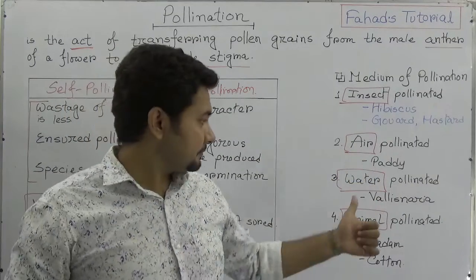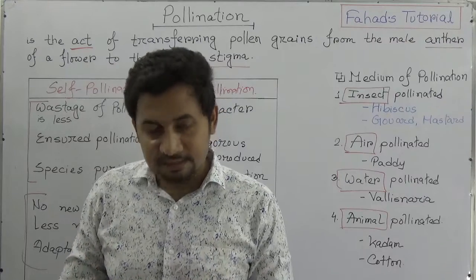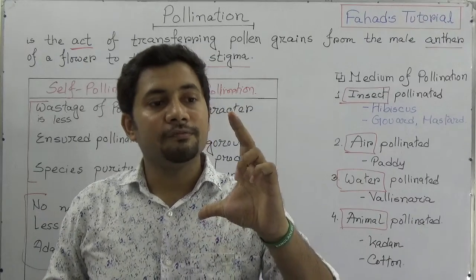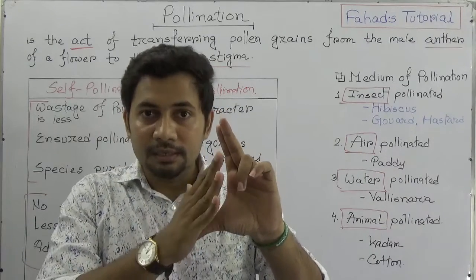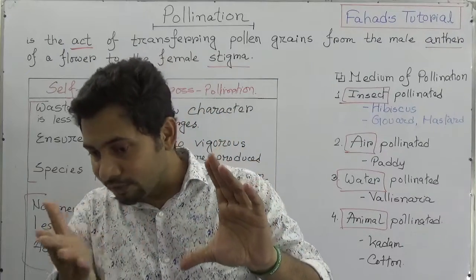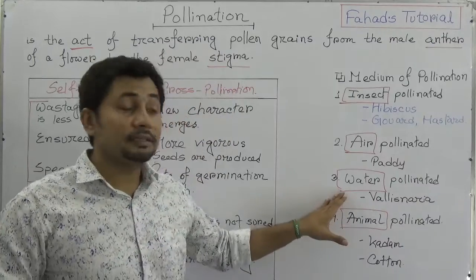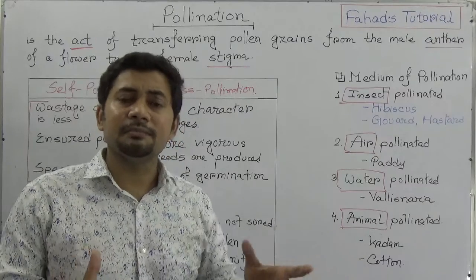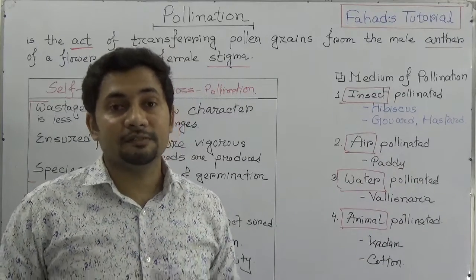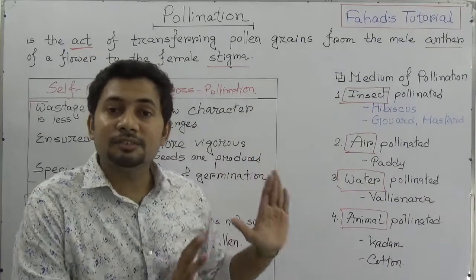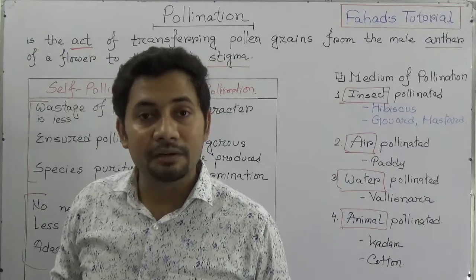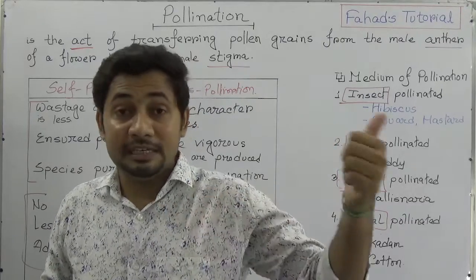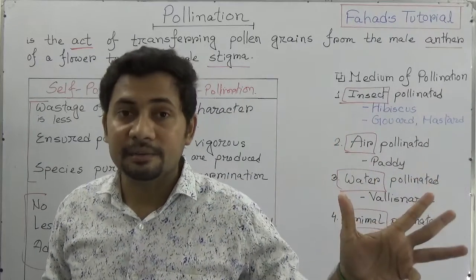For water-pollinated plants like hyacinth or Vallisneria, the flowers are found in water. The pistil of the female is much larger, and the mature Androsium separates and floats in water, connecting with the female. This is how water pollination takes place. Animal-pollinated plants use animals as carriers; an example is cotton. These four carriers — insect, air, water, and animal — act as mediums for pollination.